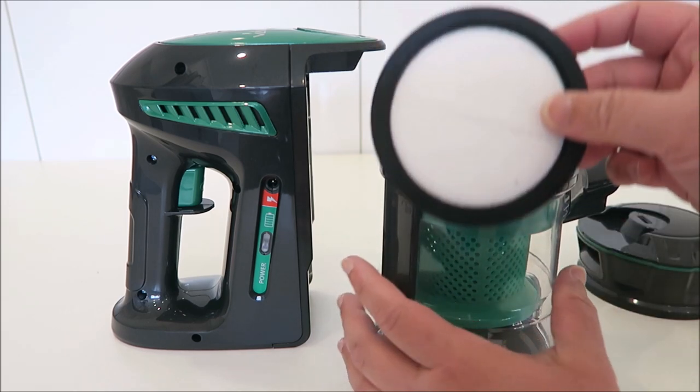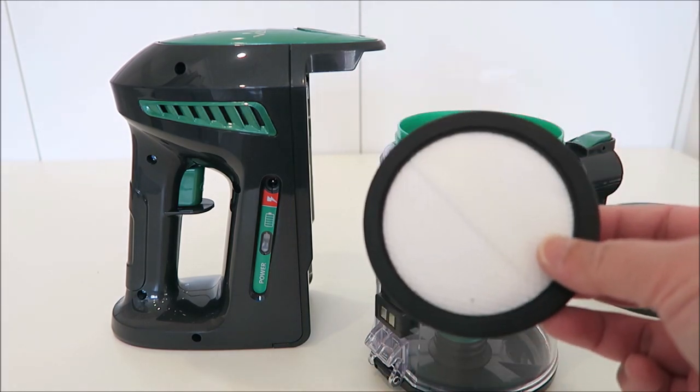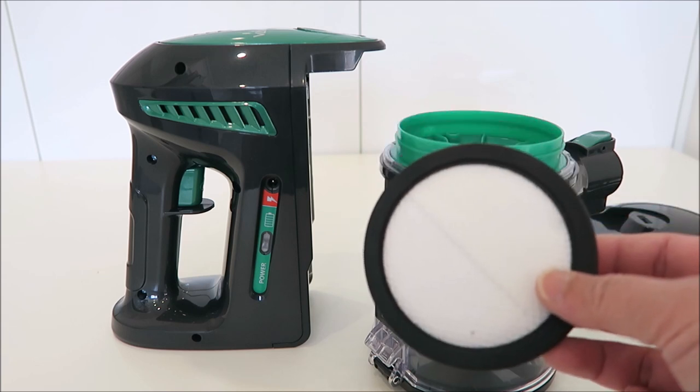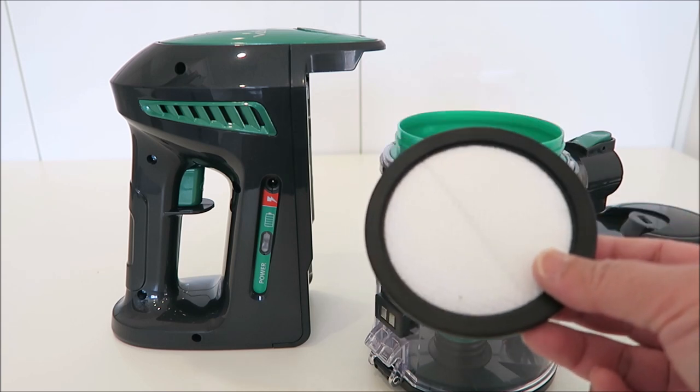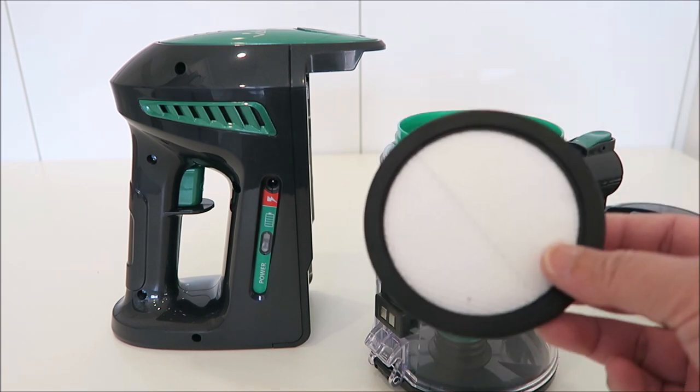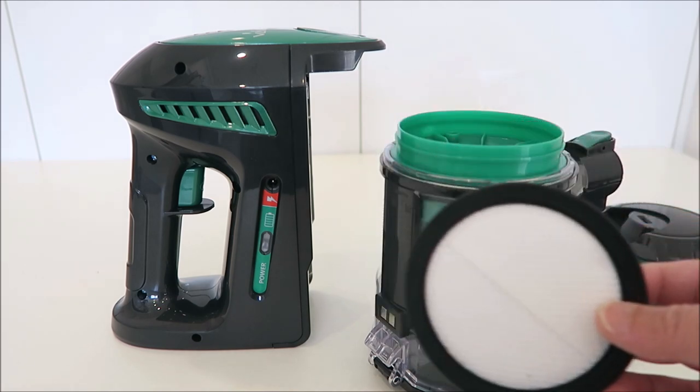And then it comes with this filter. So it suggests you wash the filter once a month with water and let it dry for 24 hours before you put it back. And they also give you a spare one in this set, which is quite handy just in case your filter is not dry and you can put the new one in.